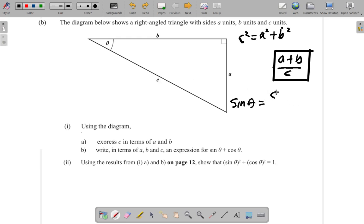Or a over c, I mean. A over c. Cos θ is adjacent b over hypotenuse c, so b/c.